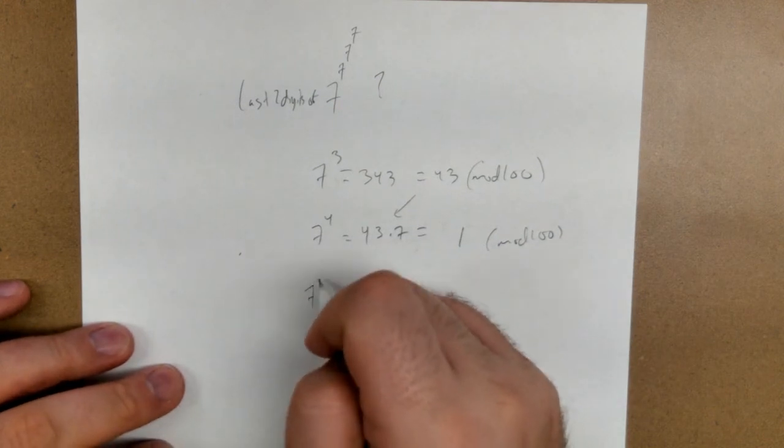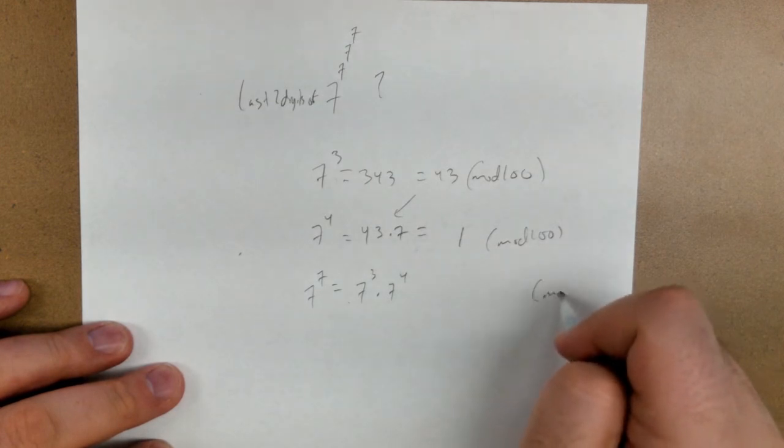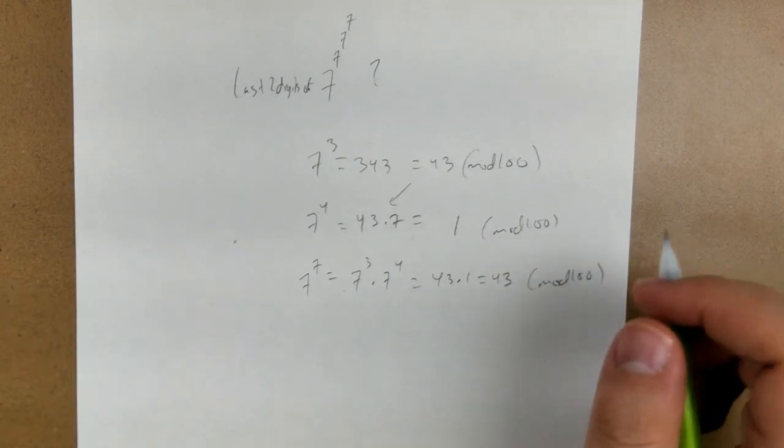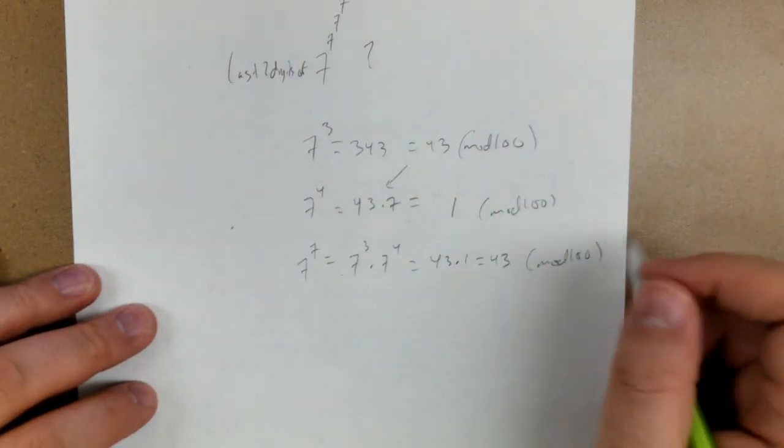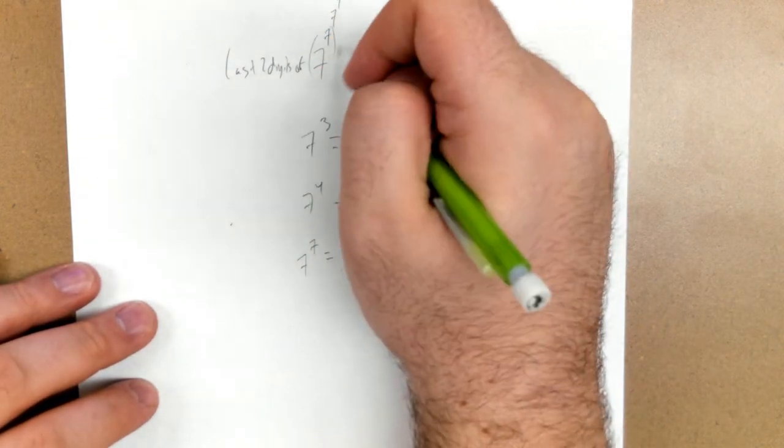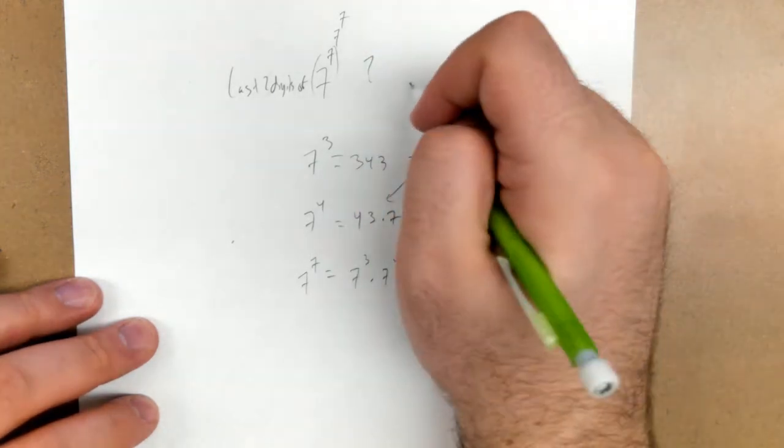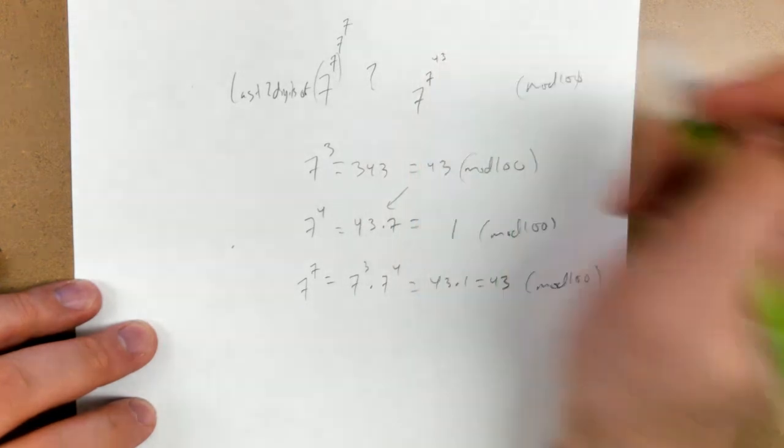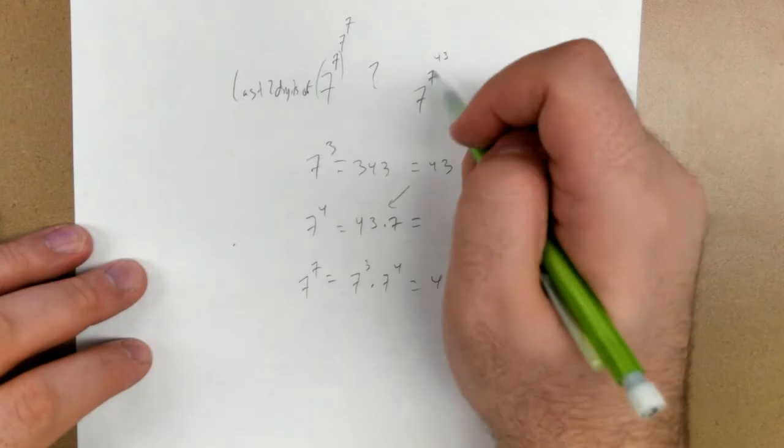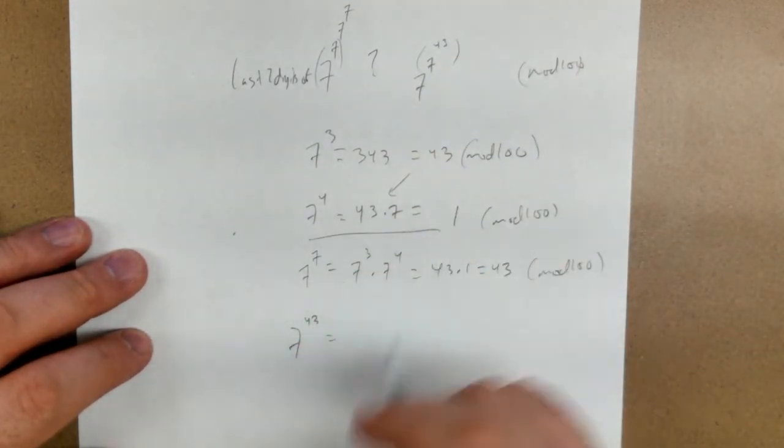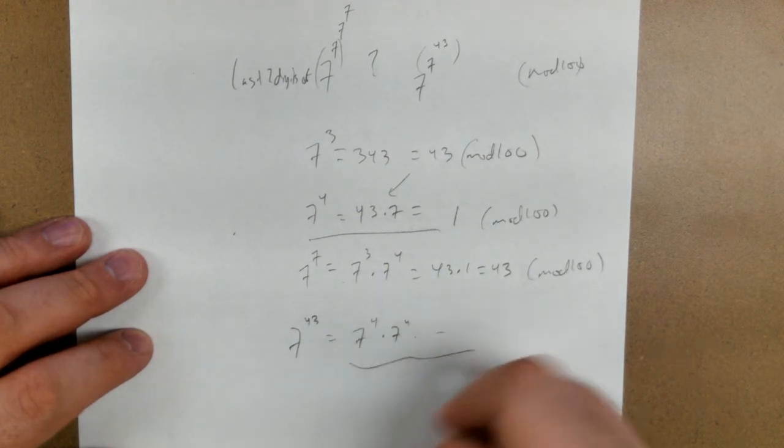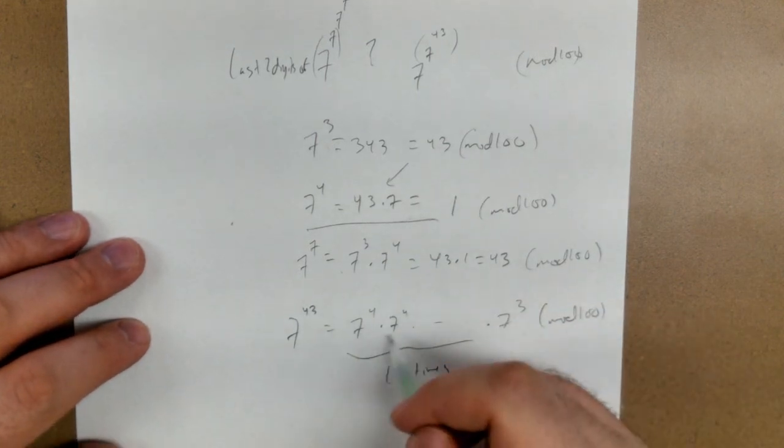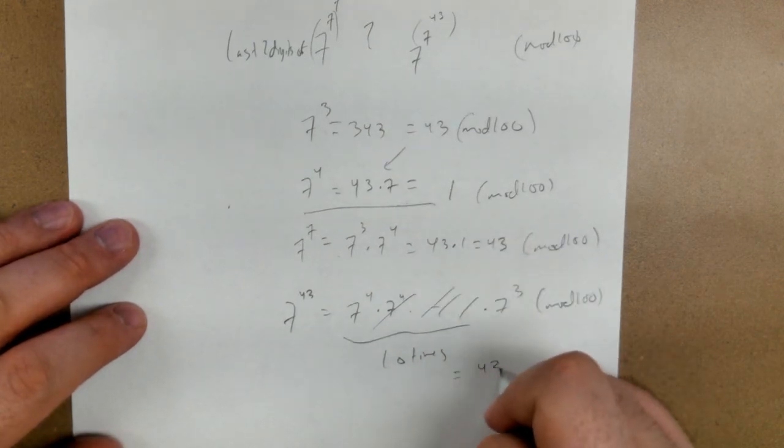That means that 7 to the 7 is 7 cubed times 7 to the 4th. But we're going to stay in mod 100 land, and this is 1, so this is 43 times 1, so this is 43. Okay, so 7 to the 7 to the 7, you have to be careful. I can say mod 100 that I can think of this as 7 to the 7 to the 43 mod 100. So 7 to the 7 would be the same as 43.